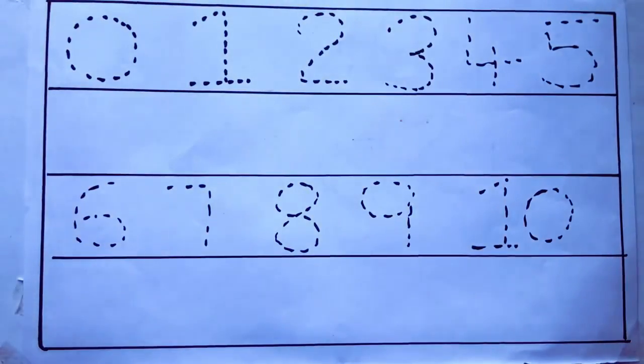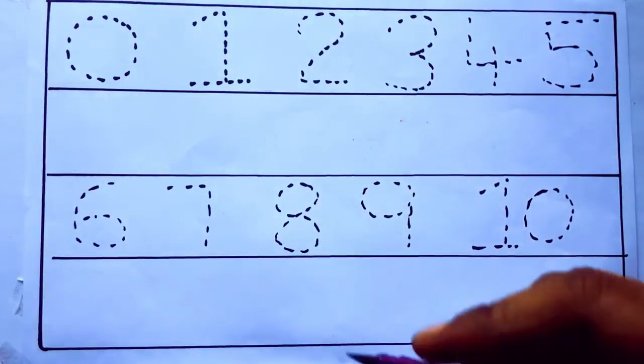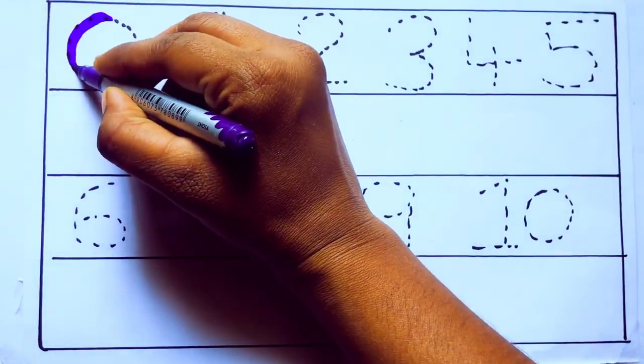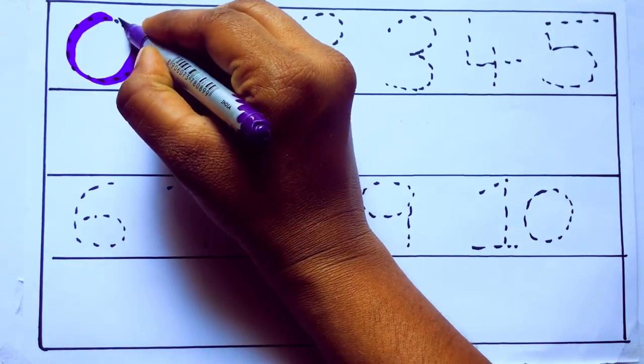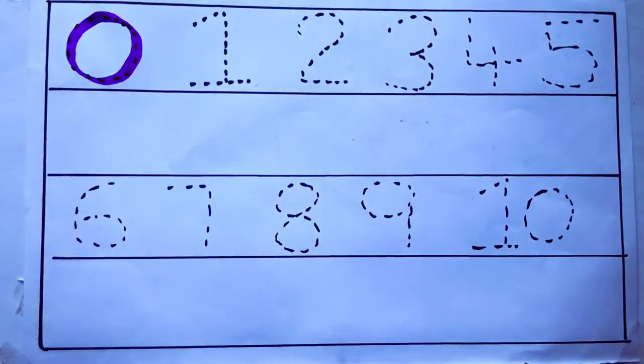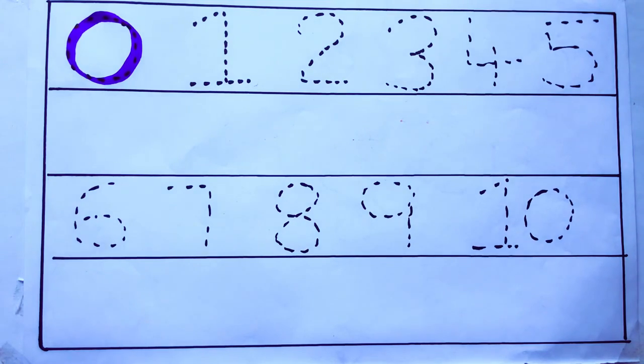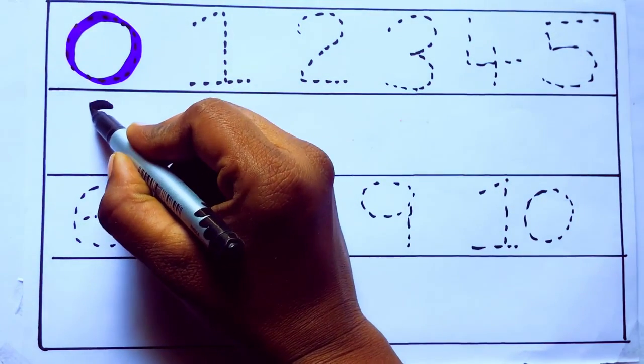Let's draw numbers. Violet color 0, Z-E-R-O. Violet color 0.